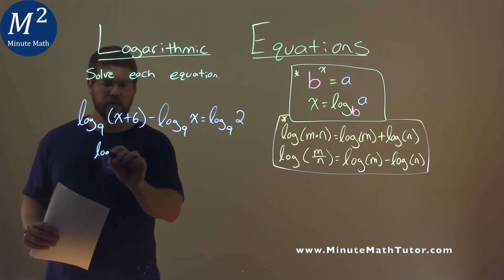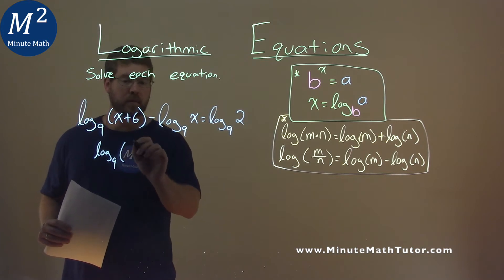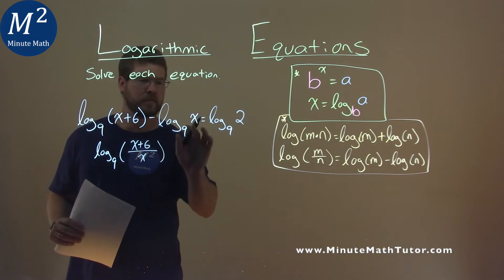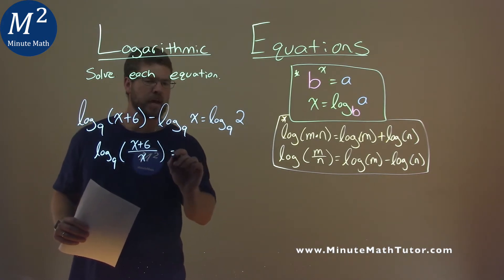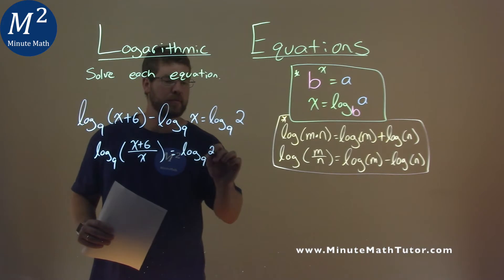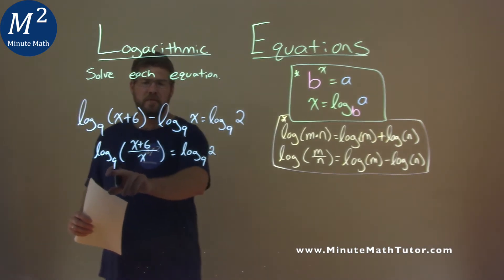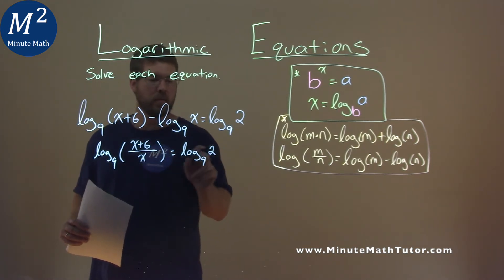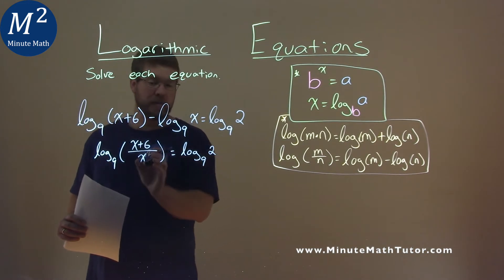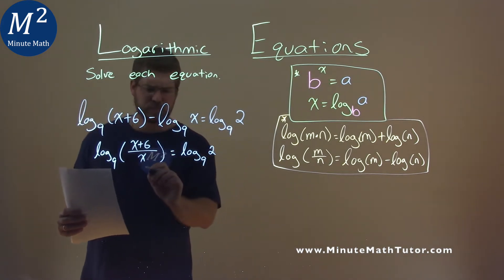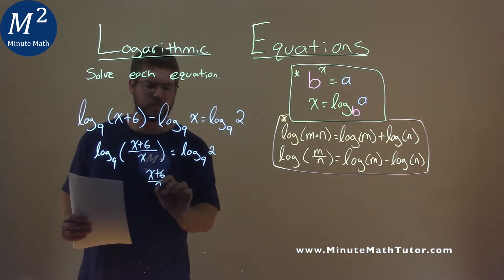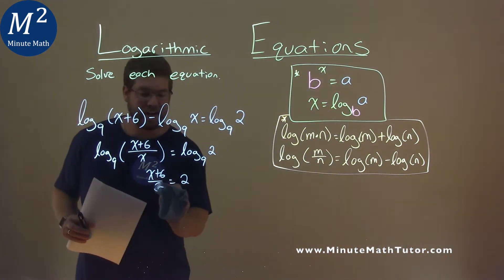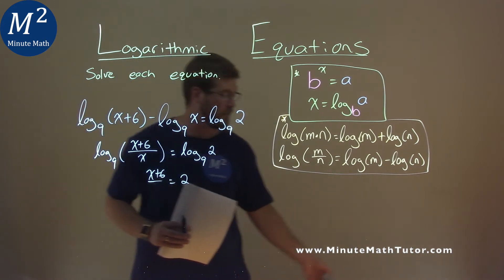So we have log base 9 of one big inside part, which is x plus 6 divided by x, and that's equal to log base 9 of 2. We have the same base of 9, so we can set what we're taking the log of equal to each other and ignore the logs. So we have x plus 6 over x is equal to 2. If you caught that mistake earlier, let me know down in the comment section.